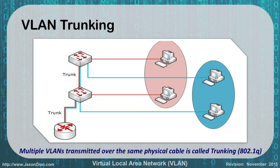In this case, we have multiple VLANs being transmitted over the same physical cable, which we call trunking, known as 802.1q. 802.1q is VLAN trunking.